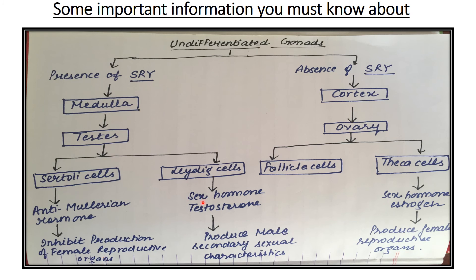Sertoli cells also induce the formation of Leydig cells from somatic cells, which secrete testosterone — the male sex hormone — producing male secondary sexual characteristics. On the female pathway, where SRY is absent, gonads develop into ovary. The supporting cells — follicle cells and theca cells — come into play and produce estrogen, which is responsible for the production of female reproductive organs. This is how sex determination in human beings is completed.